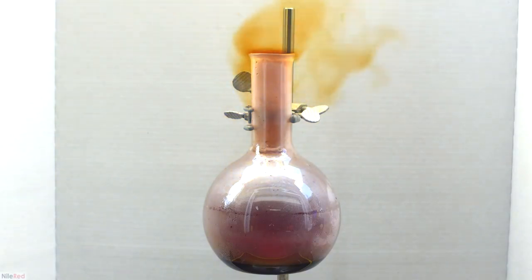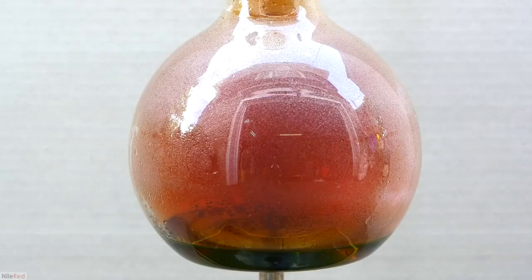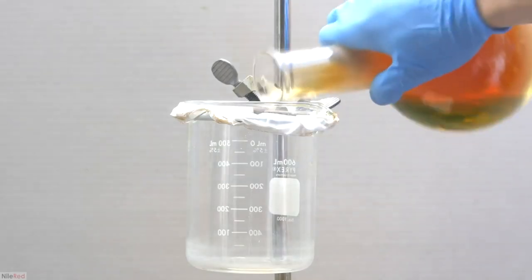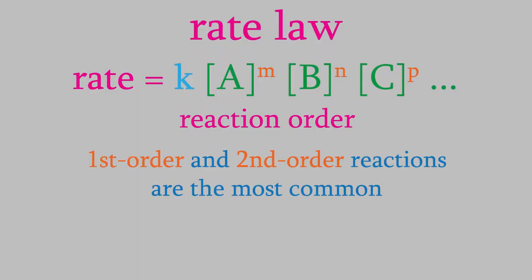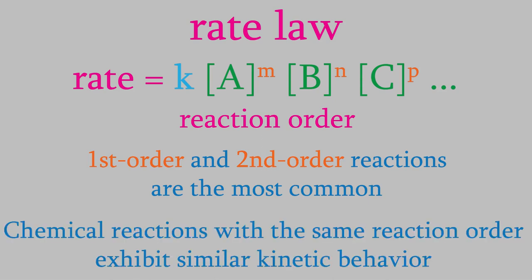For that reason, we'll spend the next few videos finding out what we can learn just by knowing the reaction order. This is a big topic, and the reaction order is something that chemists spend a lot of time finding out whenever they develop a new chemical reaction. So the ideas you're learning about here are good practical knowledge. It turns out that a vast majority of all chemical reactions are either first order or second order, which means that the exponents are either one or two. So in this video, we'll just talk about first-order reactions.